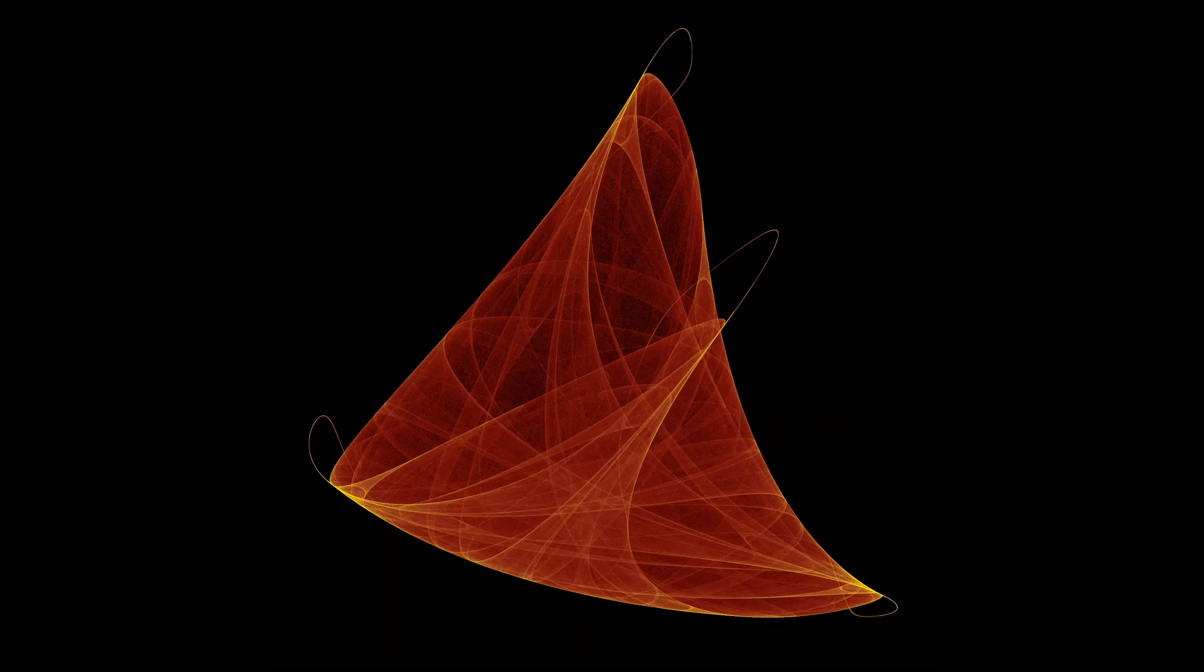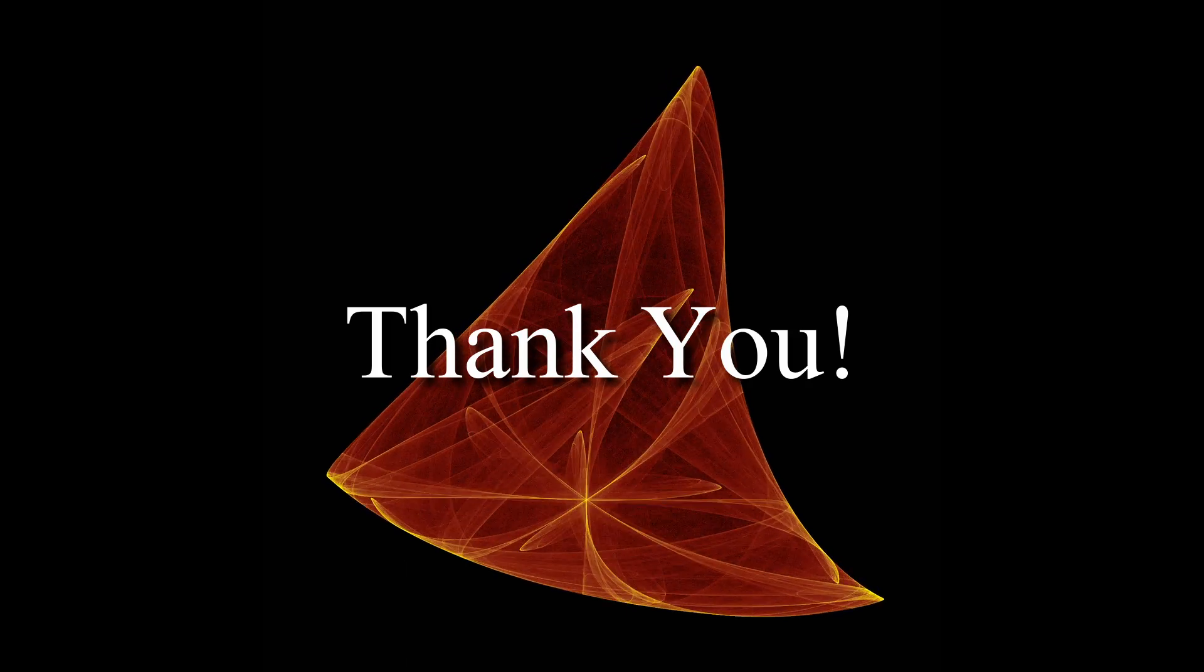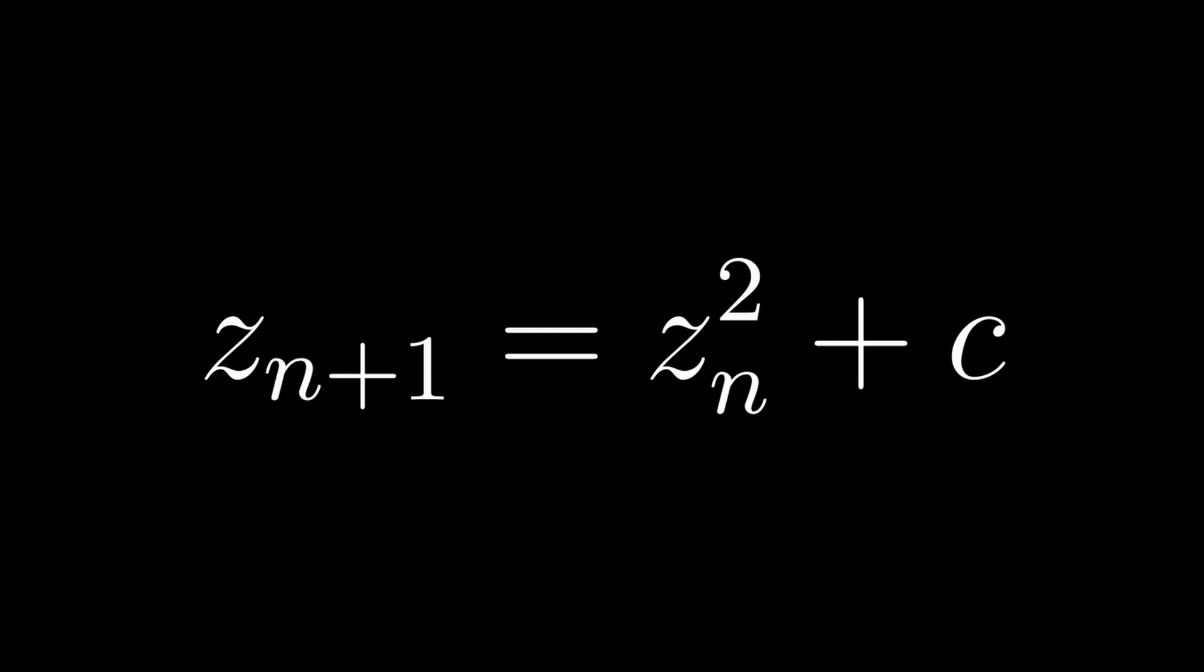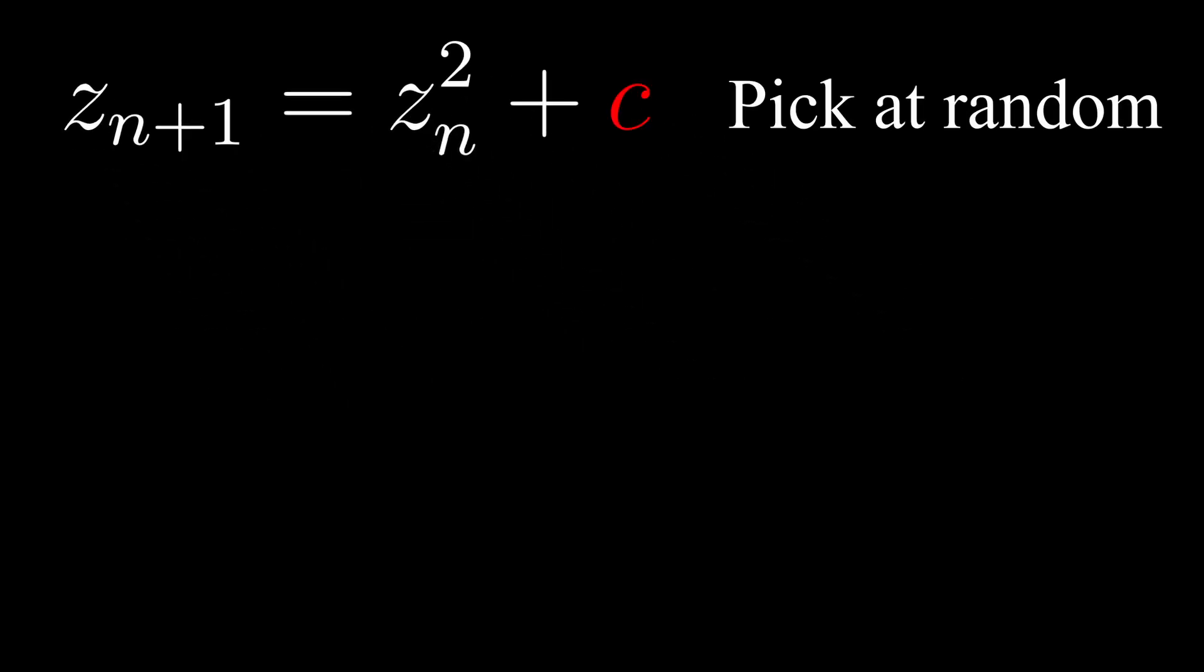If you have watched my last video on strange attractors, first of all, thank you. But also, you might remember that they were created by drawing every point of a sequence and treating the plane as a heatmap. Something like this can also be applied here as well. Let's take the original Mandelbrot formula and, if we pick a random c-value, create a sequence of z-values and then plot those on the plane. We can see them either diverging, converging or oscillating. What is of interest here are, once again, the diverging cases. More specifically, the speed of divergence.